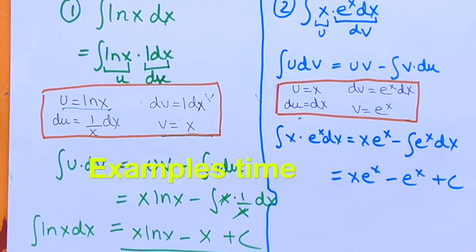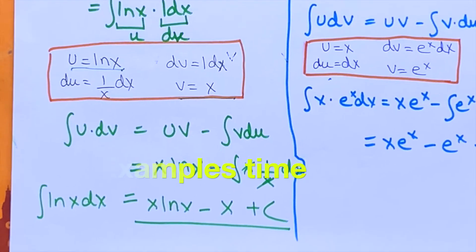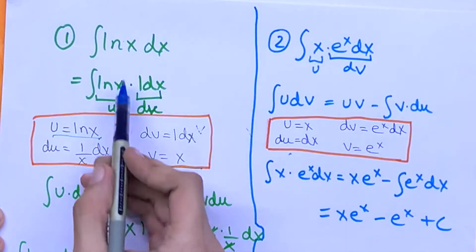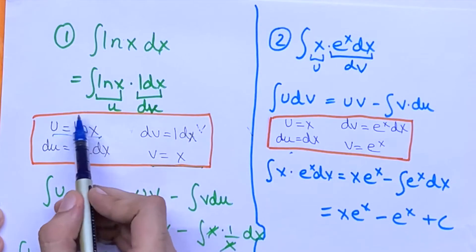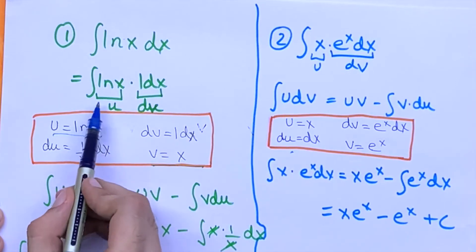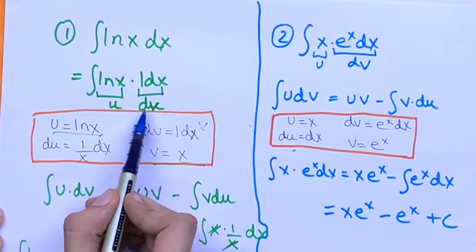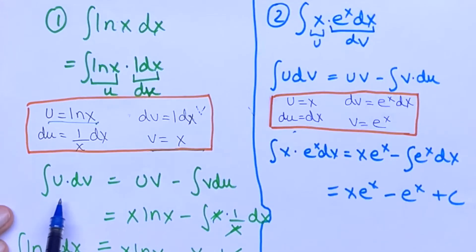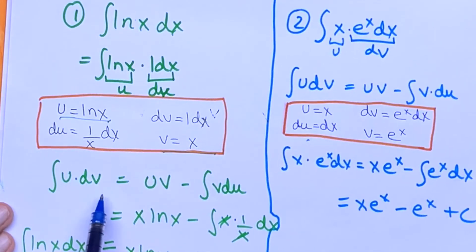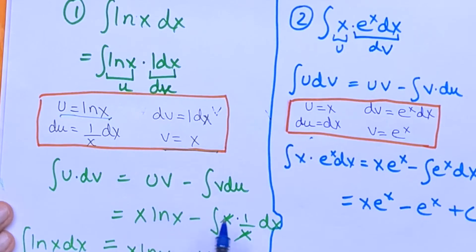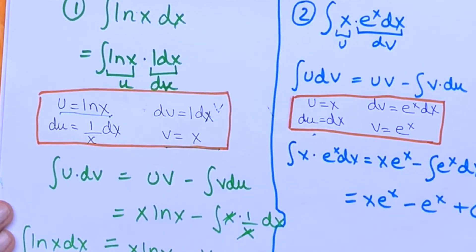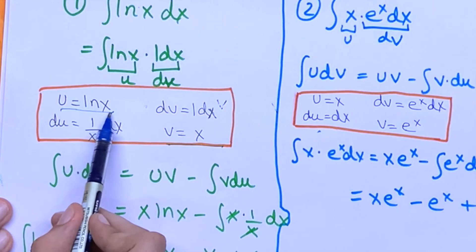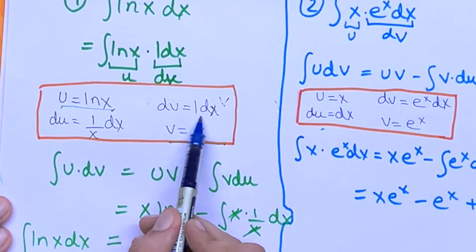Let me show you some examples for integration by parts. Let's say we have to find the integral of the natural log of x dx. We can write this as the natural log of x times 1 dx. Using the formula, we have the integral of u times dv is equal to u·v minus the integral of v·du. So I've taken u as the natural log of x and dv as 1 dx.